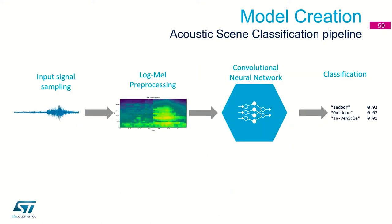We are building an audio stream classification application. As input, we have a time domain signal — just a raw audio signal. We can transform the time domain signal into the frequency domain, which means we will build spectrograms based on the input raw audio signal. A spectrogram is just a picture.